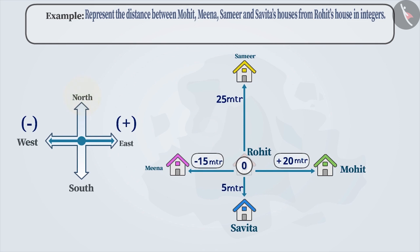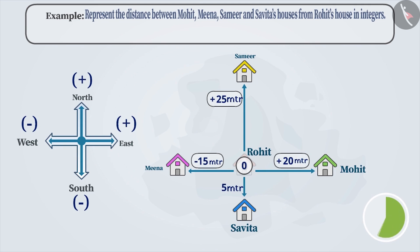Similarly, we represent the distance towards the north by a positive sign and the distance towards the south by a negative sign. Therefore, the distance from Rohit's house to Samir's house is plus 25 meters. Can you find the distance from Rohit's house to Savita's house? Any ideas? Since the distance towards the south is represented by a negative sign, the distance from Rohit's house to Savita's house is minus 5 meters.